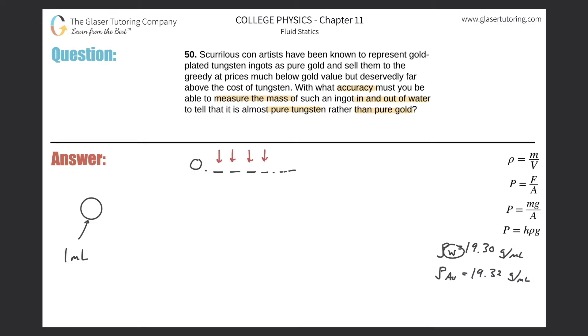And if this thing is tungsten, which is represented by the chemical symbol W. Actually, interestingly, the reason why it's W is because tungsten has another name, it's actually known as wolfram. It comes from the compound wolframite. So we have the density of tungsten equaling the mass of tungsten divided by the volume of tungsten.